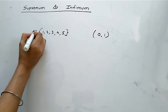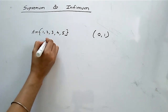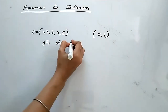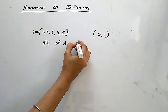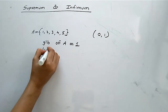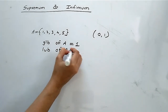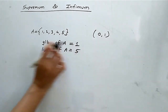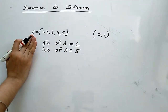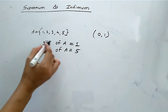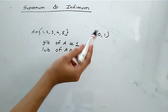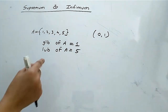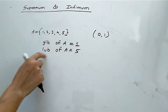For set A, the greatest lower bound (GLB of A) will be 1, and the least upper bound (LUB of A) will be 5. The lower bounds are 1, 0, -1, and so on, but the greatest among them is 1. The upper bounds are 5, 6, 7, and so on, and the smallest among them is 5, so LUB of A is 5.